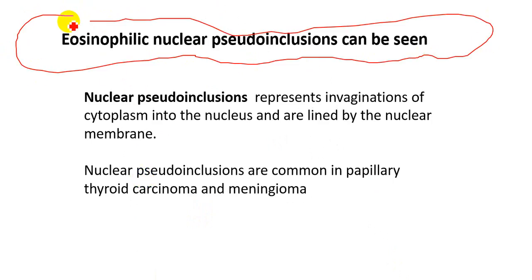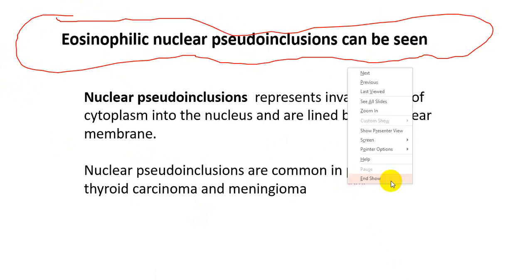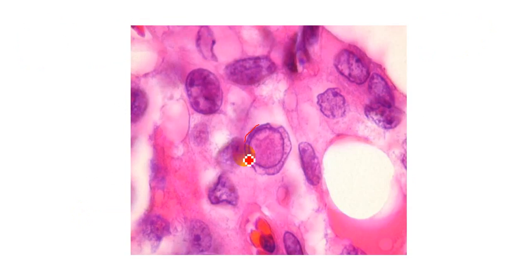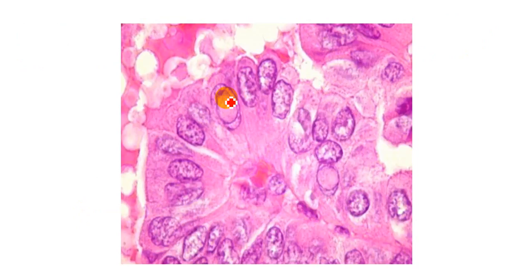The next important microscopic feature is eosinophilic nuclear pseudo-inclusions. Eosinophilic nuclear pseudo-inclusions are invaginations of cytoplasm inside the nucleus, and they are lined by nuclear membrane. Eosinophilic nuclear pseudo-inclusions are seen in papillary carcinoma of the thyroid gland and in meningioma. You can see the nuclear membrane lining these pseudo-inclusions.